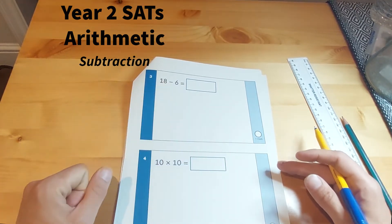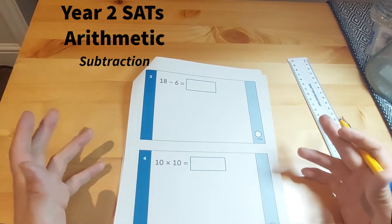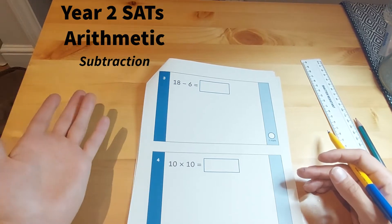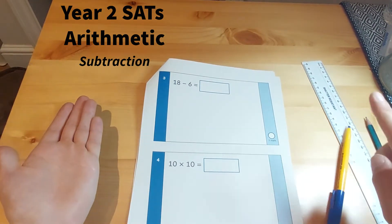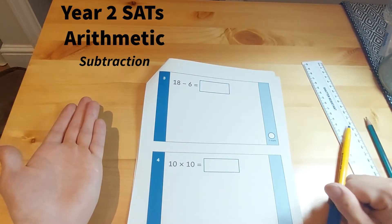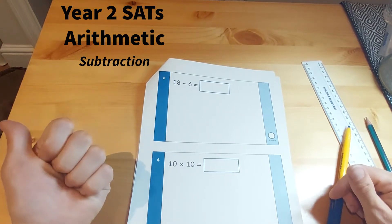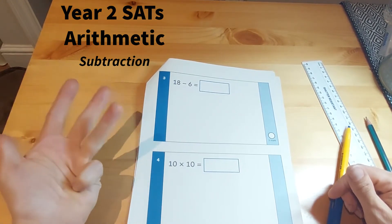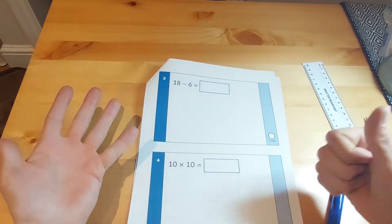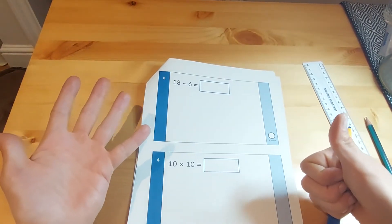So 18 take away 6. There are several ways you can teach the child to do this. You can ask them to put 18 in their head and then to count back six times. So we'd go 17, 16, 15, 14, 13, 12. And that number is 12.